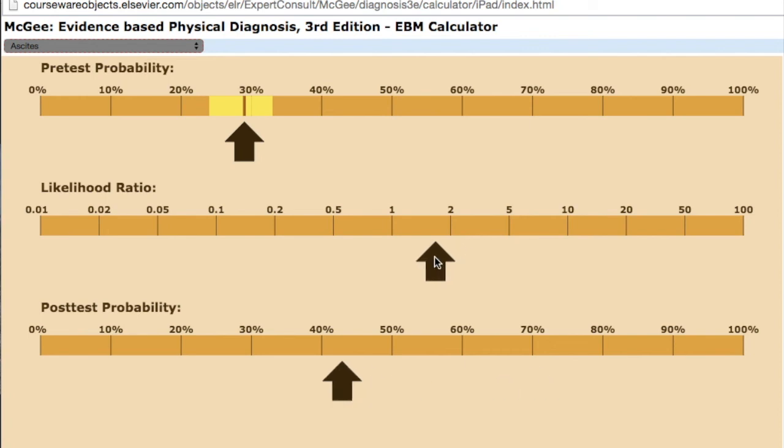Another test we talked about having a pretty good negative predictive value was the absence of shifting dullness, which had a positive likelihood ratio of 0.4. So if you're 30% sure that your patient had ascites, you test for shifting dullness, you don't appreciate it, all of a sudden your post-test probability is now down near 15%, about half as sure as you were before. That's a pretty good test.